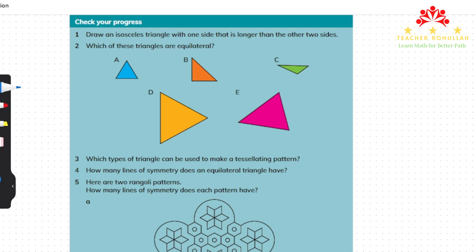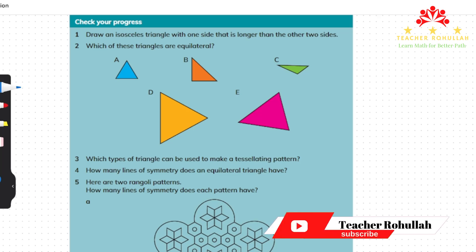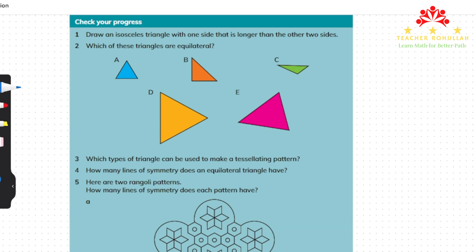Hello and welcome to today's lesson. In this lesson I'm going to work on the last part of Unit 2 of Cambridge Primary Mathematics Learners Book 5. This unit is about patterns and 2D shapes. The last part of this unit, which is aimed to check students' understanding, consists of six questions that we will work on step by step.